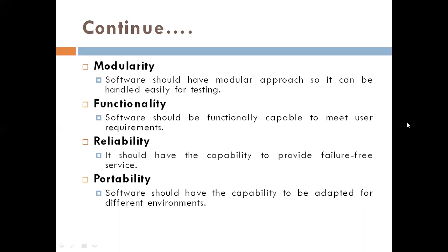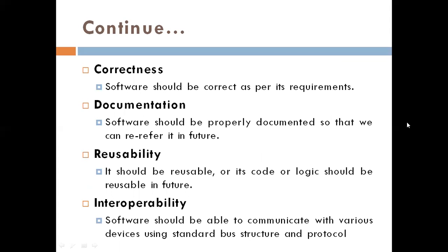Next is portability — software should have the capability to be adapted for different environments, for example if software works on Windows, Linux, and other operating systems, it should be feasible to run on those environments. Next is correctness — software should be correct as per its requirements. Then documentation — software should be properly documented so we can re-refer to it in the future. Also reusability — its code or logic should be reusable in the future. Finally, interoperability — software should be able to communicate with various devices using standard bus structures and protocols.